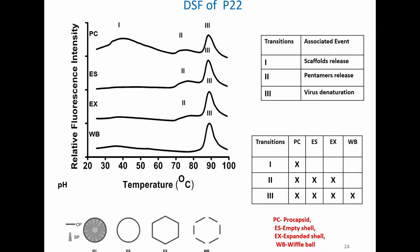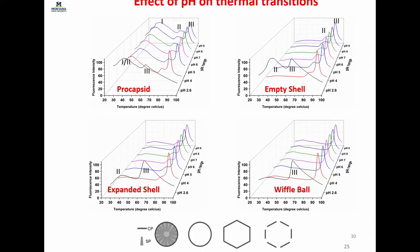This allows us to assign what those transitions are. Transition one is associated with the release of our scaffold — we're watching the scaffold come out, and this is a really broad event. Transition two is pentamer release. And transition three is when our virus completely deforms. What this really tells us is we have big differences in the thermal stability of each of these forms of the particle. As we move through this maturation through the expanded shell, we see increasing Tm values. The wiffle ball actually has the highest Tm — when you pop out those pentamers, you've essentially improved your thermal stability, which fits with some of what we've heard about the pentamers being defects in these particles.